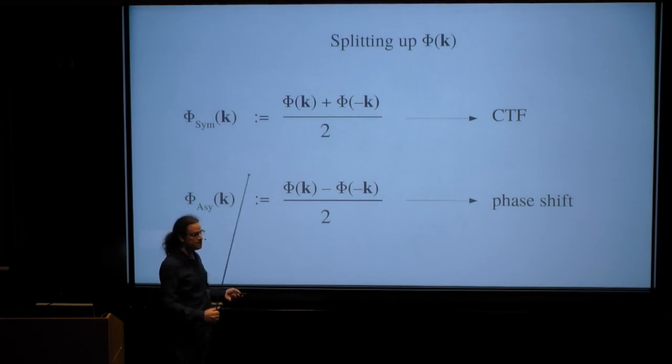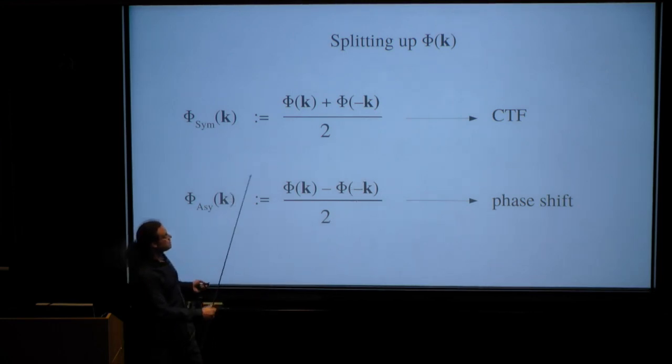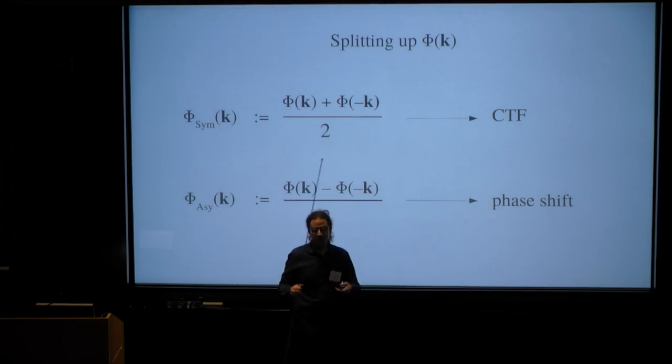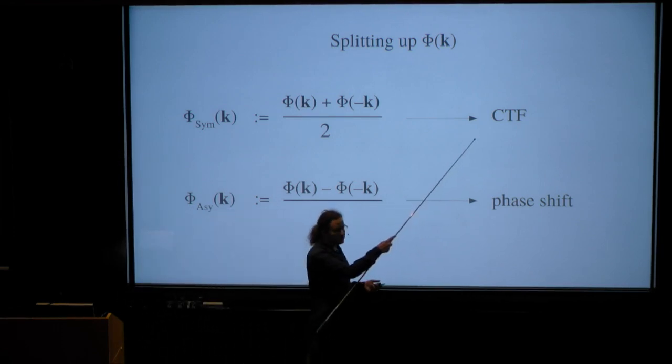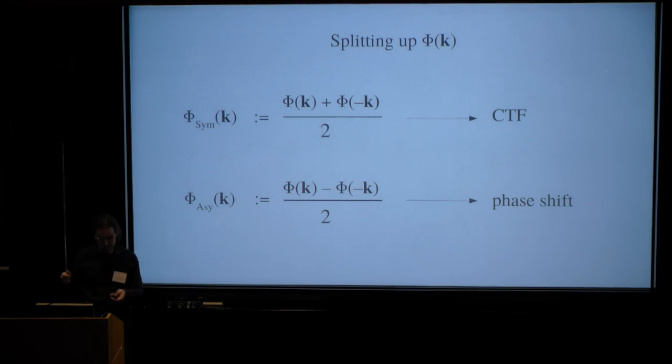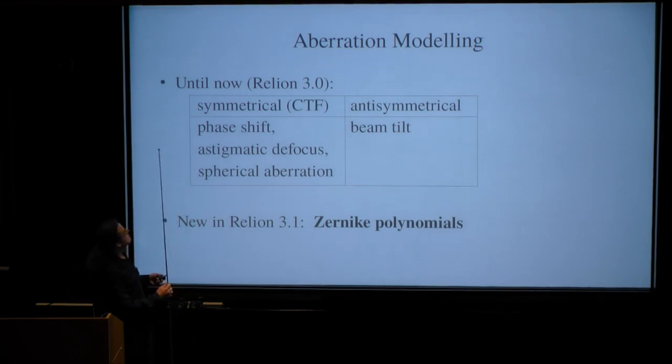So what we can always do is we can split the phase delay up into a symmetrical component, which is just the average of the two sides, and an anti-symmetrical component. Now the symmetrical component produces the CTF, and the anti-symmetrical one introduces a new phase shift. At some point we have defined the CTF to be a real valued function, so the phase shift has to be treated separately. We could also think of the phase shift as the phase angle of the CTF, but we don't. However, because the effects are different, we have to estimate these two separately and treat them separately.